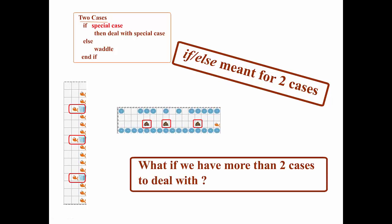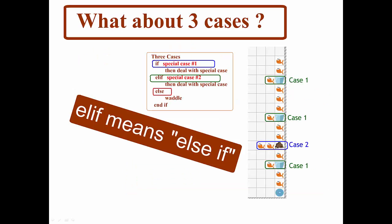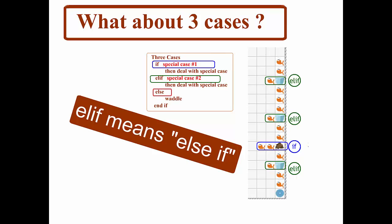But what if we have more than two cases to deal with? What if we have three cases or more? In this situation, we have to deal with more than one special case, and accordingly, we can't just use an IF-ELSE. We need an IF ELIF ELSE. ELIF really meaning an abbreviated ELSE IF. Because we have multiple special conditions, we'll test each one separately, and if none of them are true, end with ELSE.